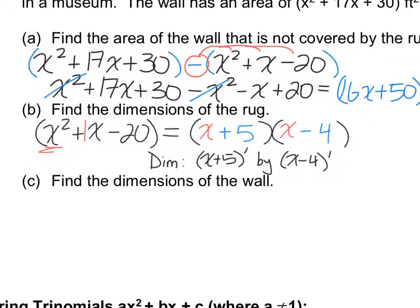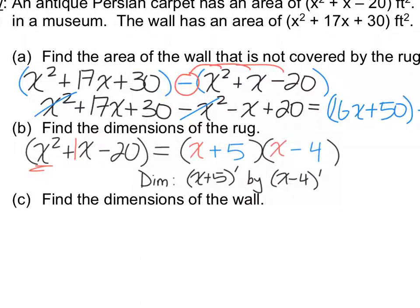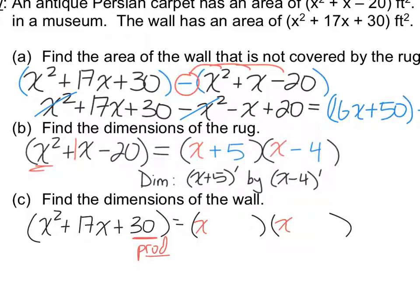5 minus 4 would give you the 1, so that's what we need. So the dimensions would be (x + 5) feet by (x - 4) feet. The last part's really just asking you to do the same thing, just with a different polynomial. So we know it's going to be x and x. I have to multiply to 30. And I have to add to the 17. 15 and 2. So plus 15 plus 2. So my dimensions are (x + 15) feet by (x + 2) feet.